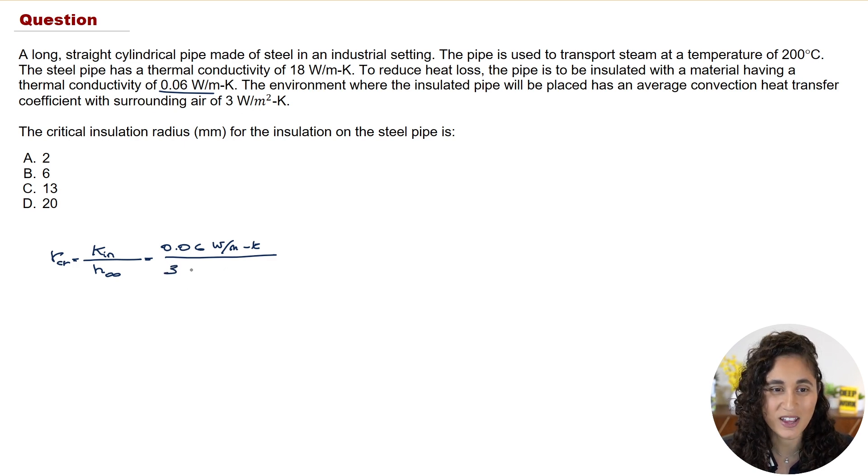So we're going to do 3 here, and then here we have watts per meters squared Kelvin. Okay, now note, guys, here that the watts and watts cancel, and then here the Kelvin also cancels. And then here the meters also cancels with this meter. We're going to be left with meters. So here what we have is per per meter, which is the same thing as meters, right? So if you guys plug these numbers in your calculator, you're going to get 0.02 meters.